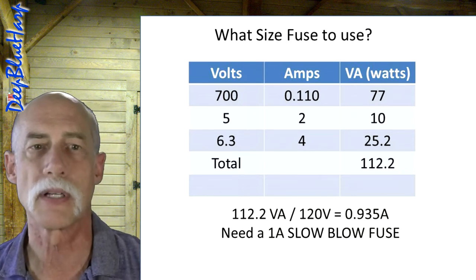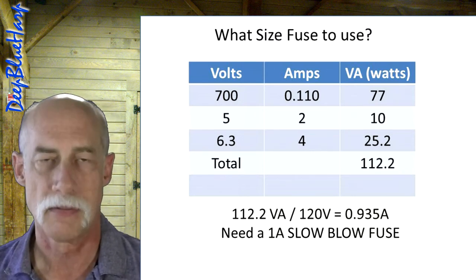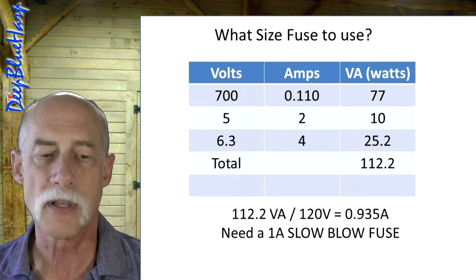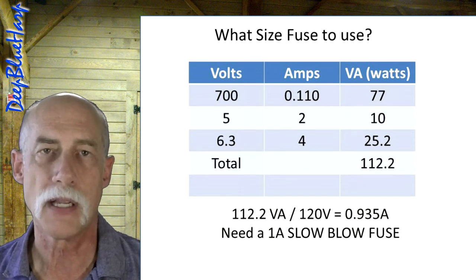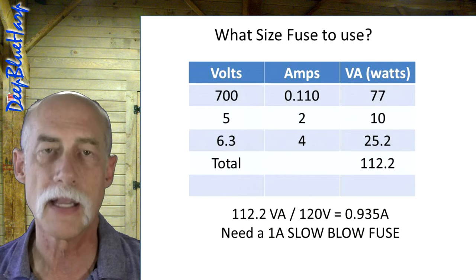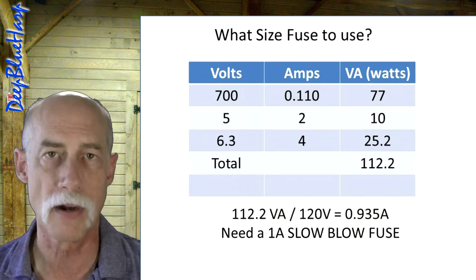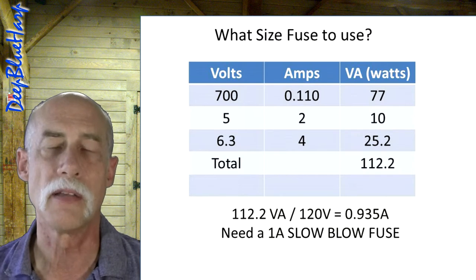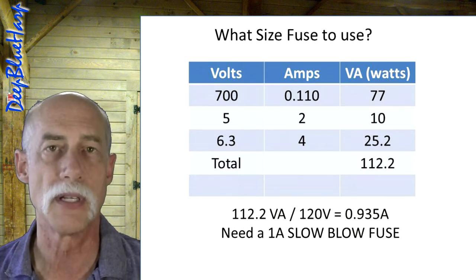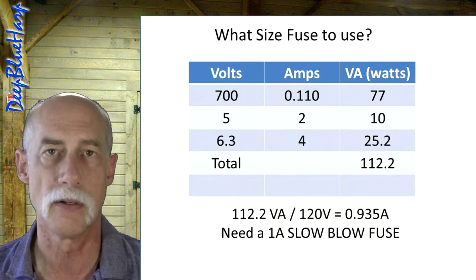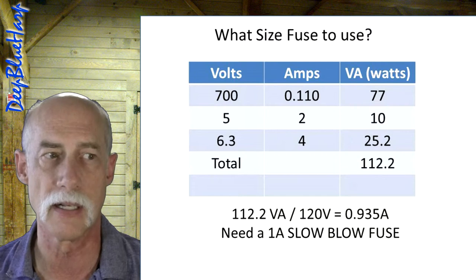Now, this is the power circuit. First note, we're dealing with a 5Y3GT vacuum tube rectifier. It is an indirect heated vacuum tube rectifier. Therefore, we're going to take the voltage for B plus off of pin 8. I'll show you the difference between direct heated and indirect heated vacuum tube here in another slide.